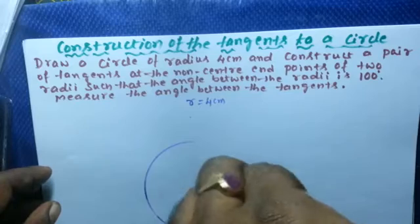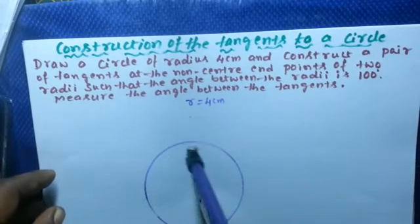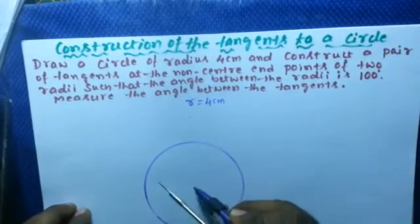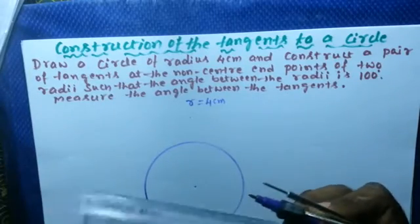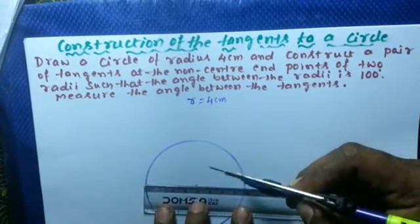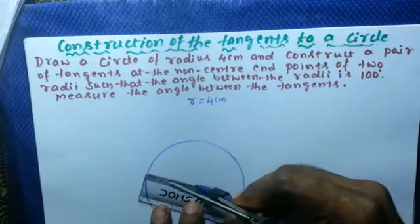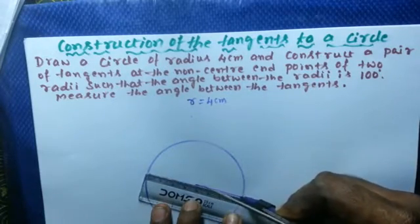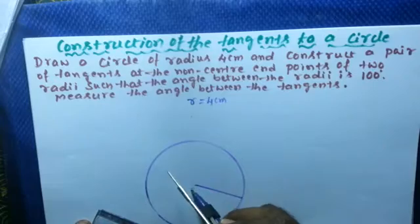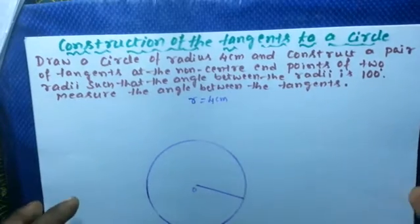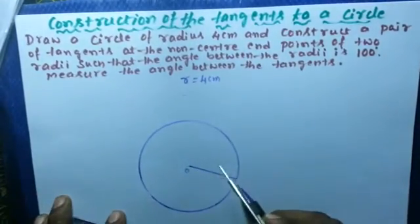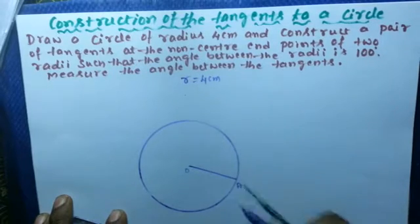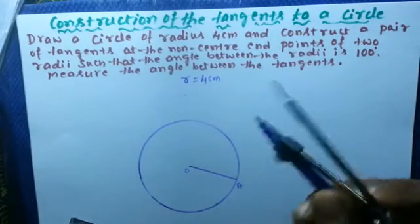Take 4 centimeters as the radius in the compass and draw a circle of radius 4 centimeters. Then draw one radius. Mark the center as O, and name this radius OA.